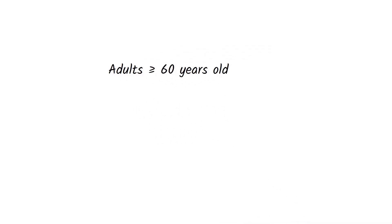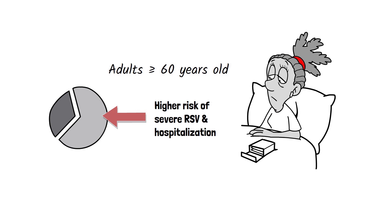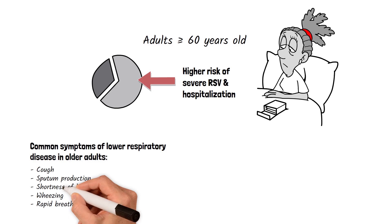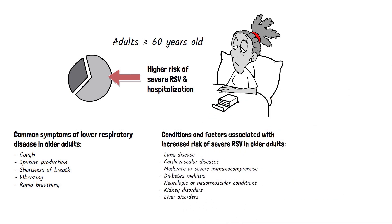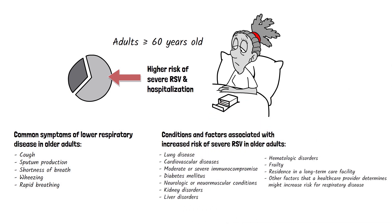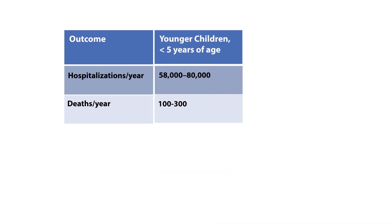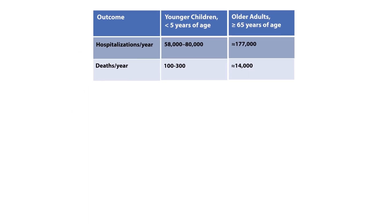Adults aged 60 years and older have higher risk of severe RSV-associated lower respiratory tract disease and hospitalization. In addition to age greater than or equal to 60 years, some chronic medical conditions and residency in a long-term care facility are associated with the highest risk of severe RSV illness in older adults. RSV can also worsen some existing medical conditions. RSV is a major cause of respiratory disease in infants and children younger than five years old, but it causes more hospitalizations and deaths in people 65 years of age and older.